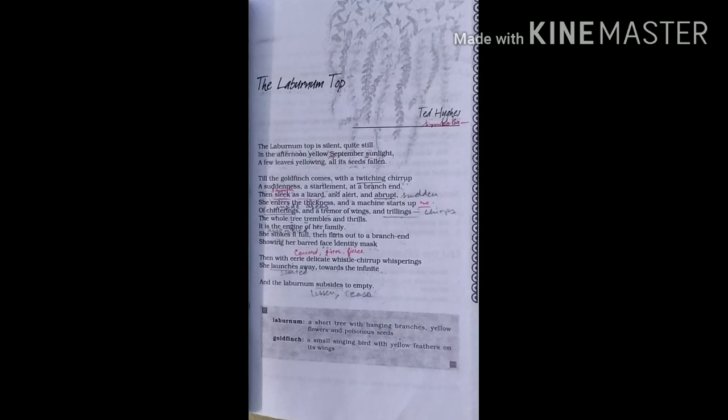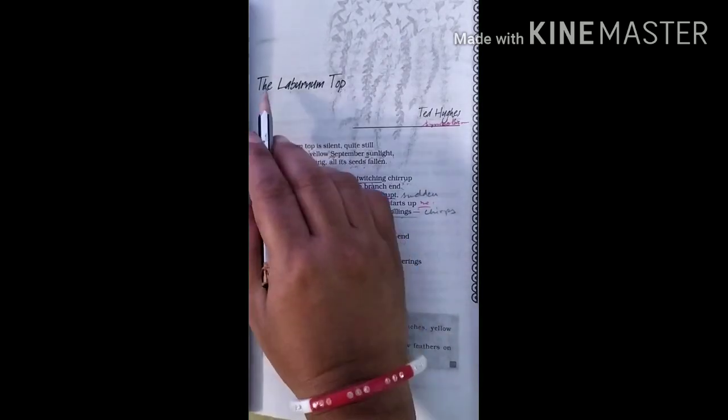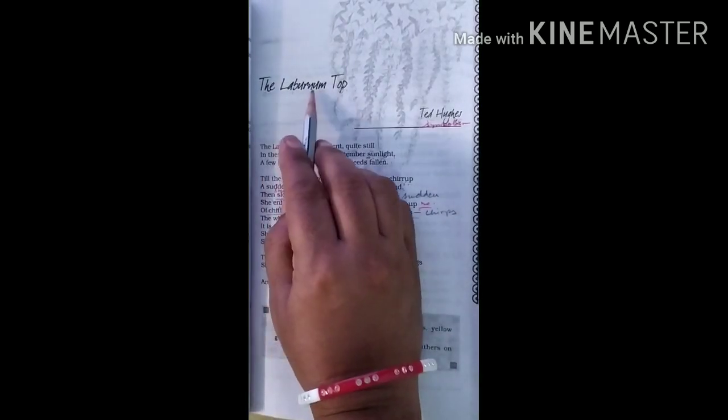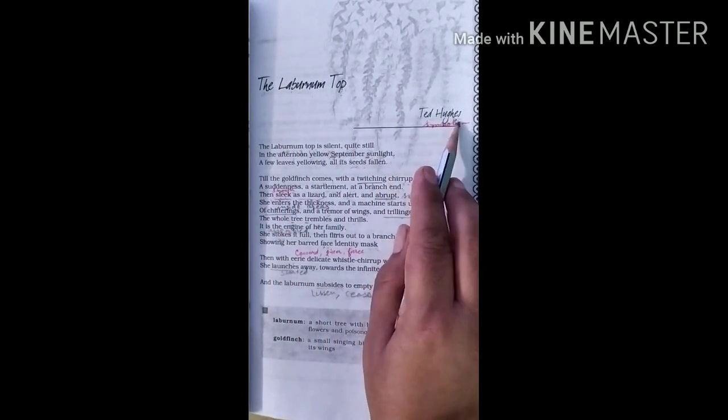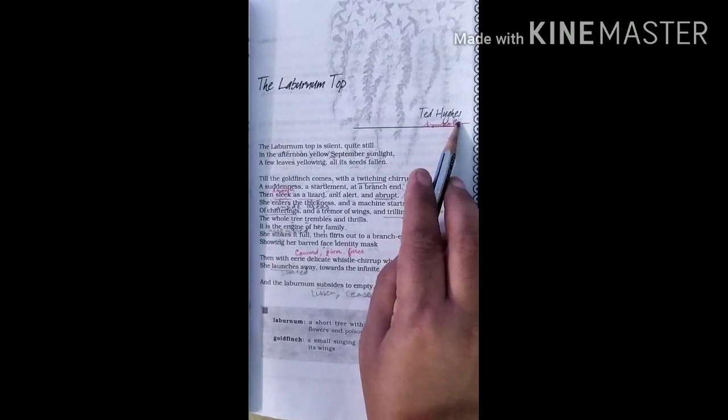Hello students! How are you? This is Pramila Malik, PGT English, and today we will do the poem The Laburnum Top written by Ted Hughes for 11th English from Hornbill book.